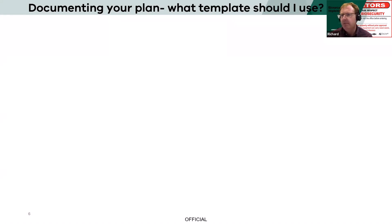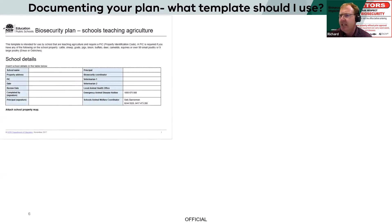When you're thinking about documenting your plan, you've got a number of different formats. The first one is the New South Wales Education Biosecurity Plan for Schools Teaching Agriculture — that's a great plan, similar to most other plans and templates out there, with added areas and suggestions about how to manage them day-to-day if you've got a school farm.